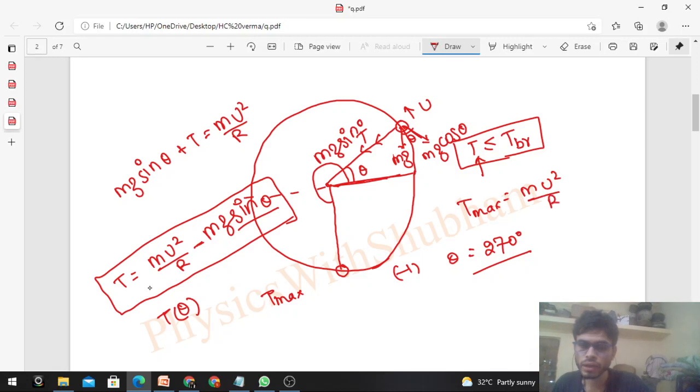The maximum tension value will be mu squared upon r plus mg. Put sin theta value as minus 1. This is the value of T max. Now, if this is the maximum tension, T max itself should be less than breaking tension. If the maximum tension attained in this entire vertical circle is itself less than breaking tension, then at all other points we are already safe.